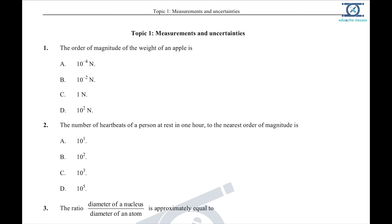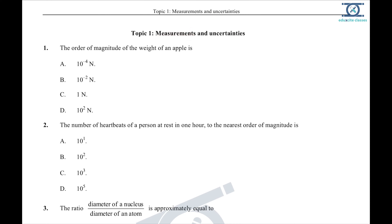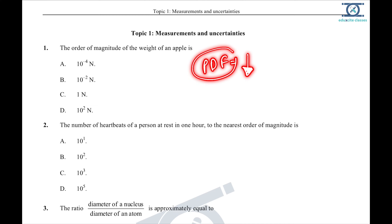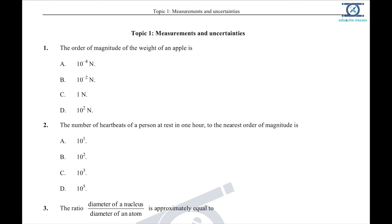Hello students, today we will discuss Topic 1. We will unwrap the Paper 1 MCQ for Topic 1, that is measurement and uncertainty. Please go through and attempt all the questions. The PDF of this worksheet is already uploaded and the link can be found in the description below. Please solve on your own and then come back to this video for the solution. I am starting with the very first question.